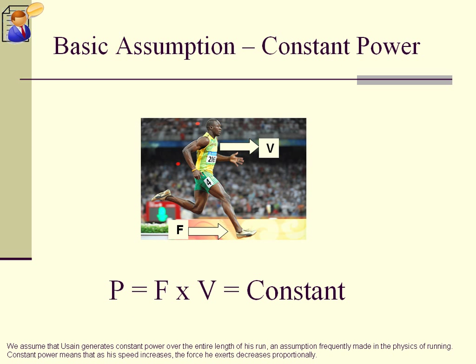We assume that Usain generates constant power over the entire length of his run, an assumption frequently made in the physics of running. Constant power means that as his speed increases, the force he exerts decreases proportionally.